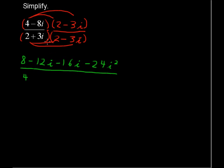2 times 2 is 4. 2 times negative 3i is negative 6i. 3i times 2 is positive 6i, so these are going to drop out. 3i times negative 3i is negative 9i squared.